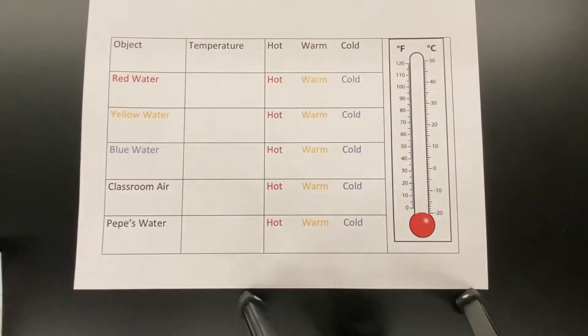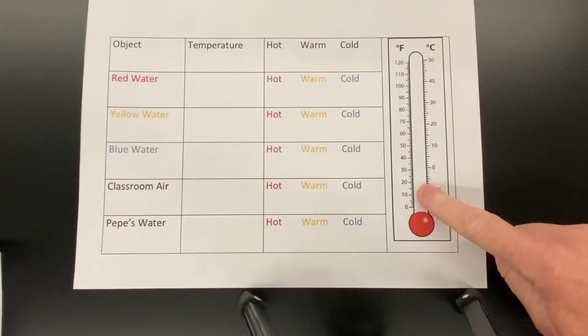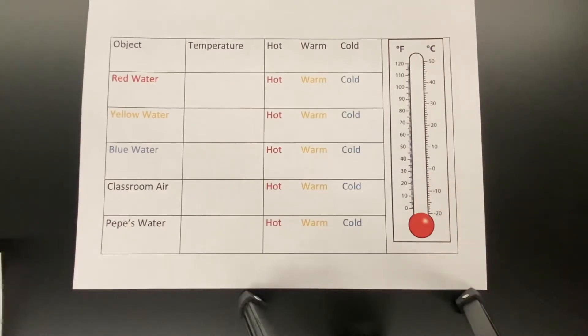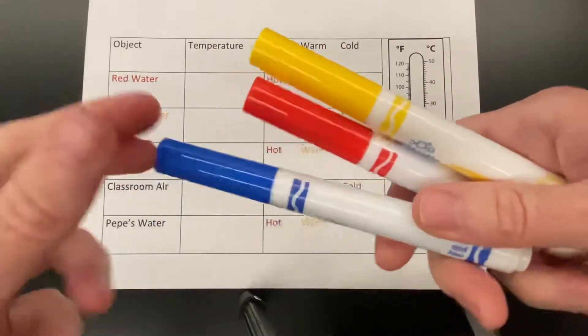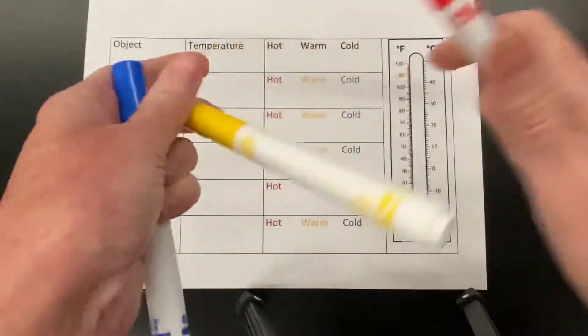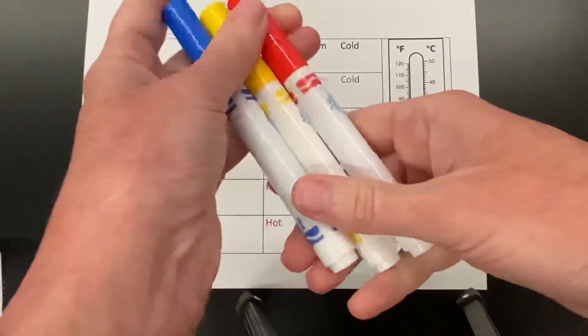Okay, I'm going to show you how we're going to color in our thermometer over here. You're going to need three colors: blue, red, and yellow. Blue will stand for cold, yellow will stand for warm, and red will stand for hot.